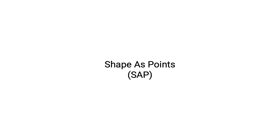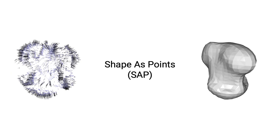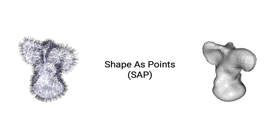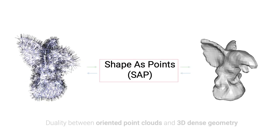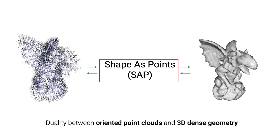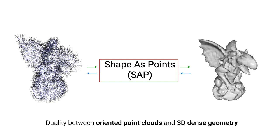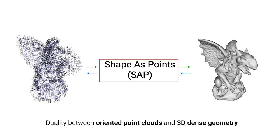What do we mean by Shape as Points? In short, SAP. For any shape, we can either represent it as dense geometry — for example, a mesh, as shown on the right — or an oriented point cloud on the left. The proposed method SAP is a differentiable version of the classic Poisson surface reconstruction algorithm. Moreover, SAP is also a new type of 3D shape representation. It allows us to efficiently connect the points with the mesh through an implicit indicator field.